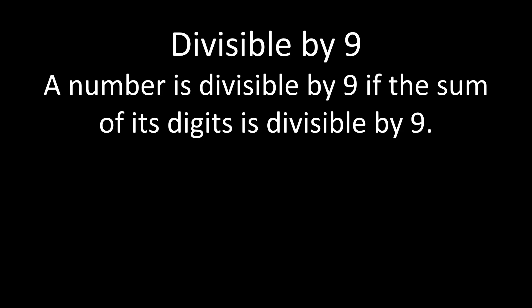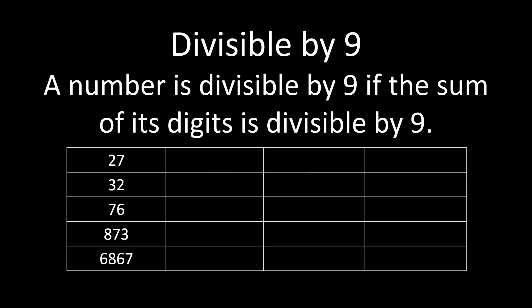The divisibility rule for 9 is very similar to the divisibility rule for 3. A number is divisible by 9 if the sum of its digits is divisible by 9. Starting with 27, we take the digits 2 and 7, add them together, and we get 9. Since 9 divided by 9 gives a whole number answer, 27 is divisible by 9.